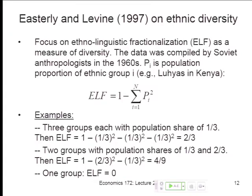ELF has a very simple interpretation: it is the probability that two randomly chosen people in a population are from different ethnic groups. The probability that two randomly chosen people are from the same ethnic group is P sub I squared; summing across all groups gives the probability of being from the same group, and 1 minus that is the probability of belonging to different groups. So in a country with three groups each at one-third of the population, the chance that two people who bump into each other on the street are from different ethnic groups is two-thirds — that's really high.